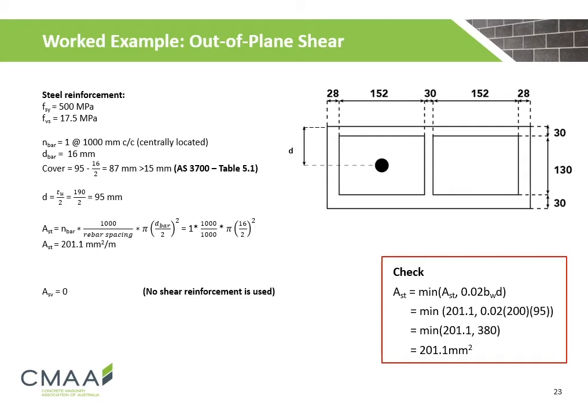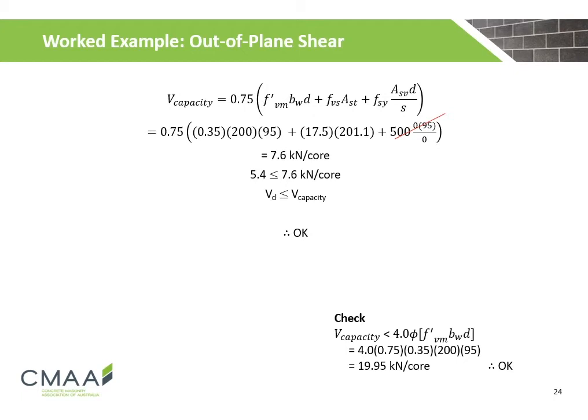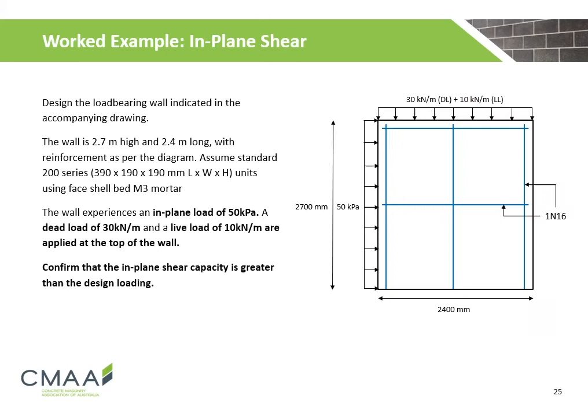No shear reinforcement is used for this example. The shear capacity is calculated to be 7.6 kN per core. We must also check that the out-of-plane shear capacity is less than 4 times the characteristic shear strength of the reinforced masonry. The out-of-plane shear capacity is less than the threshold and is therefore okay. As the design shear force is less than the out-of-plane shear capacity, the wall is okay for the given design shear loading.